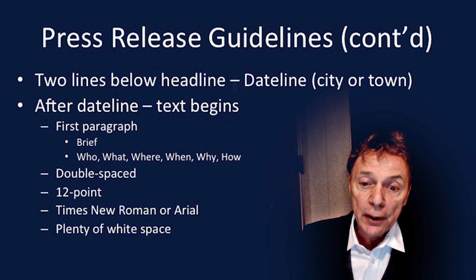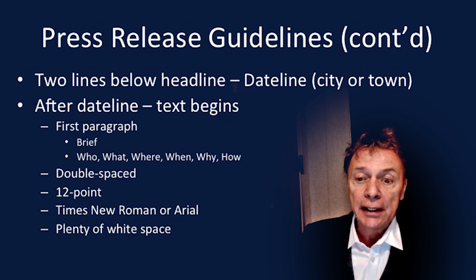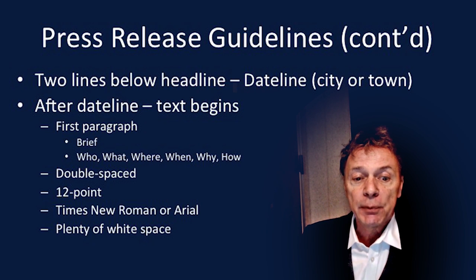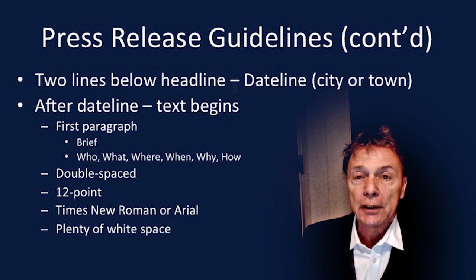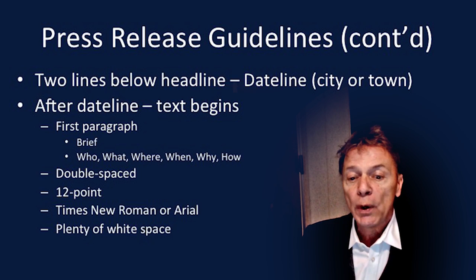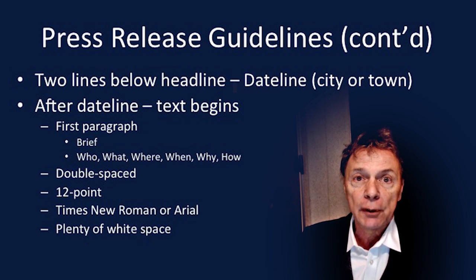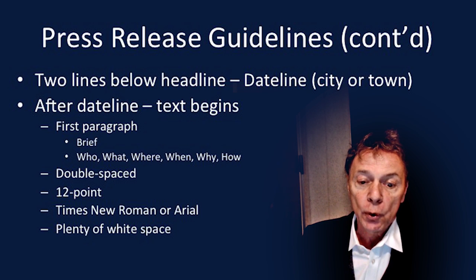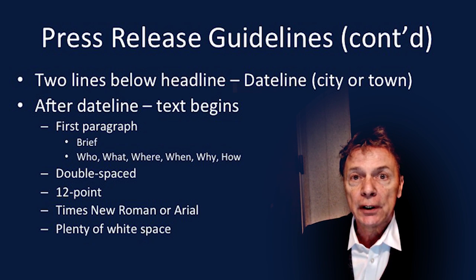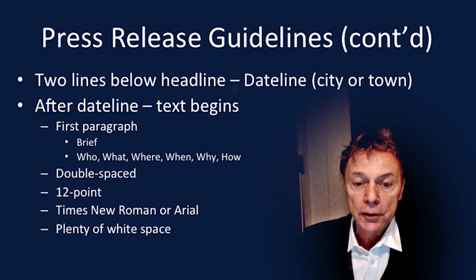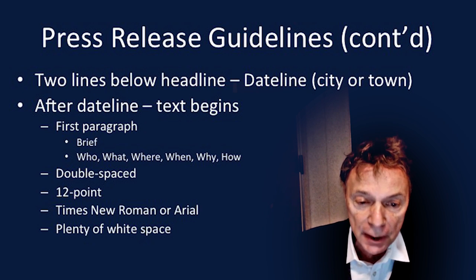Two lines below the headline is the dateline, after which the text begins. Typically, the first paragraph begins with a brief statement covering who, what, where, when, why, and how. The text is double-spaced, 12-point font — typically Times New Roman or Arial — and we try to leave as much white space as possible.